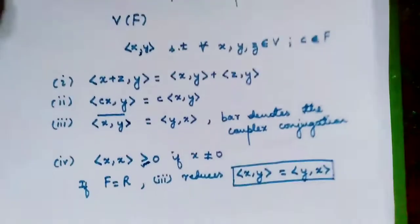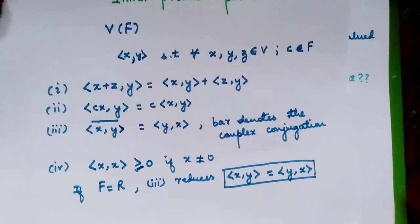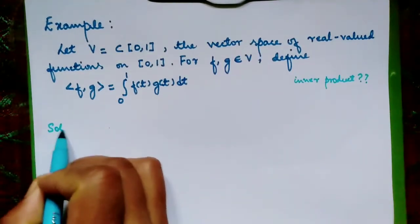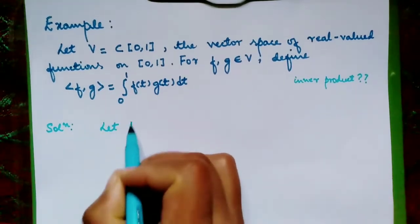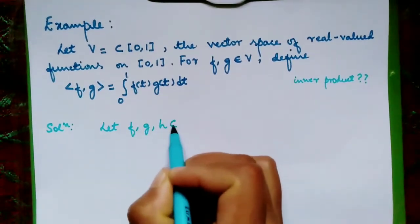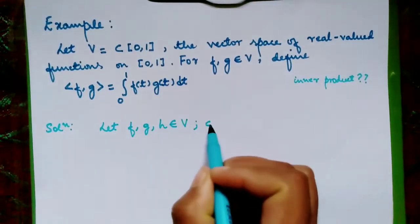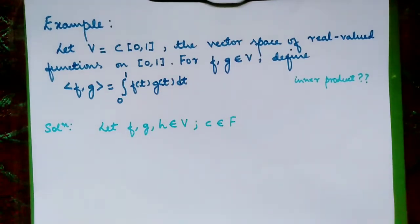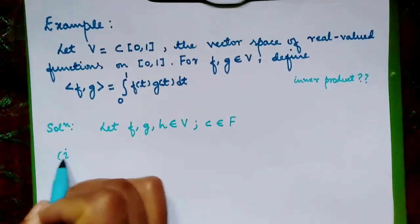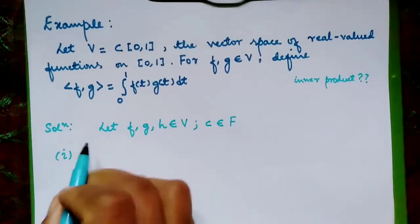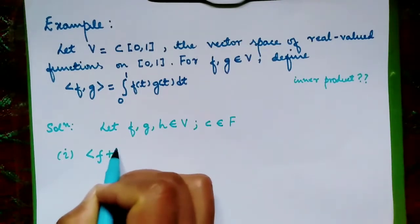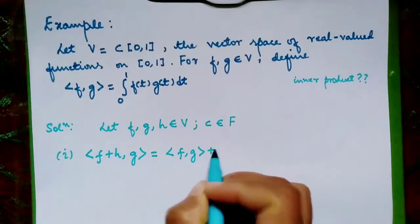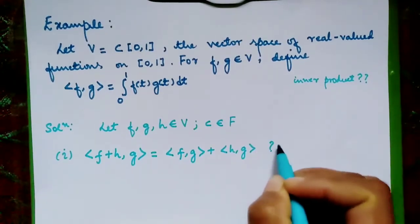For that, we have to check whether these four conditions are satisfied or not. Let us have F, G, and H from V, and a scalar C from a field F. The first condition is that the inner product ⟨F+H, G⟩ equals ⟨F,G⟩ + ⟨H,G⟩. We have to check this one.